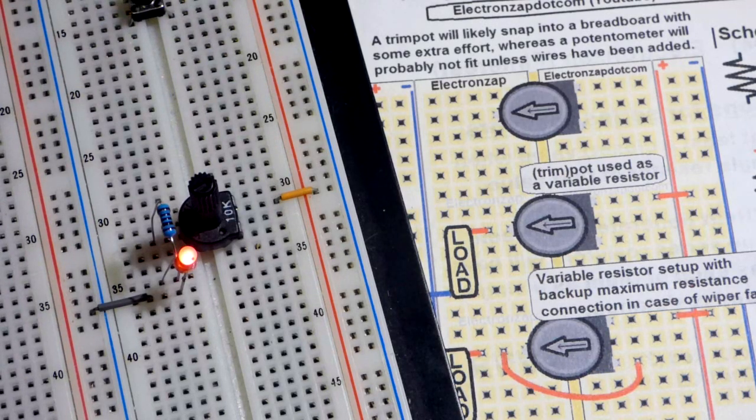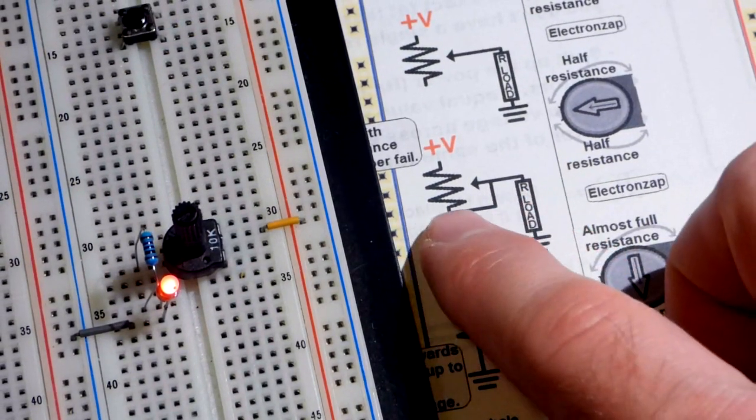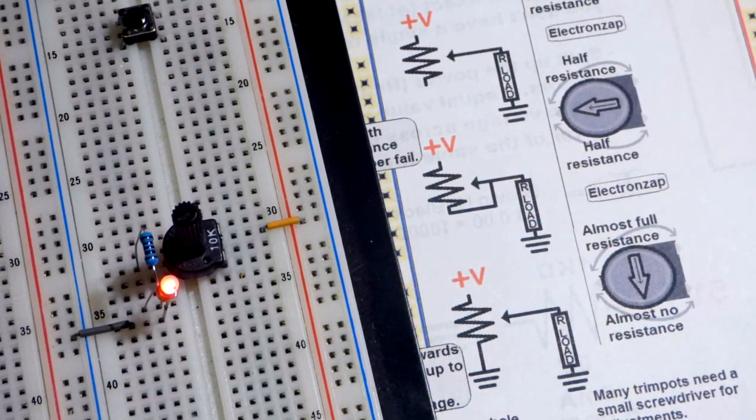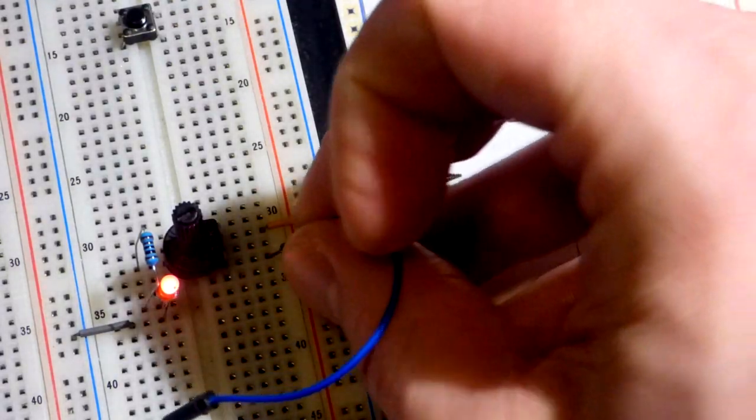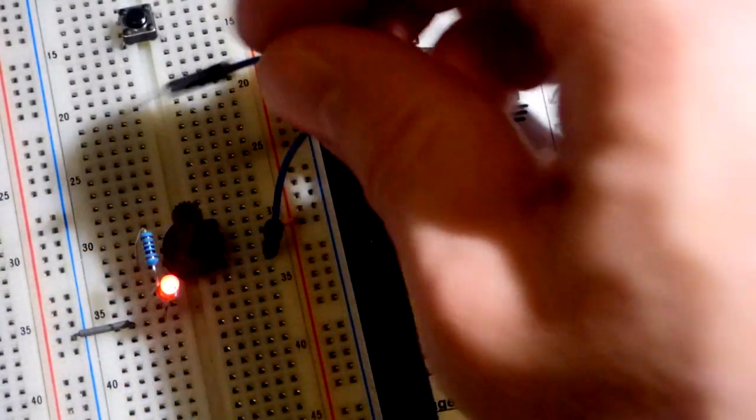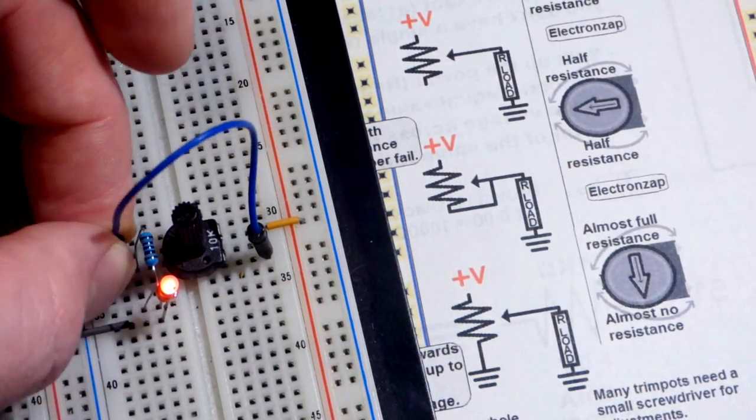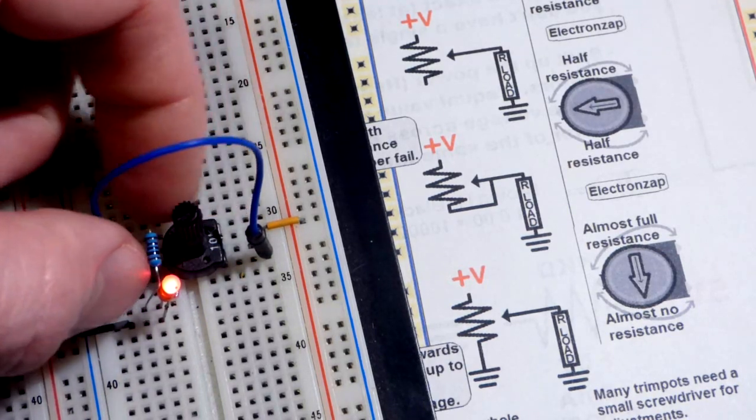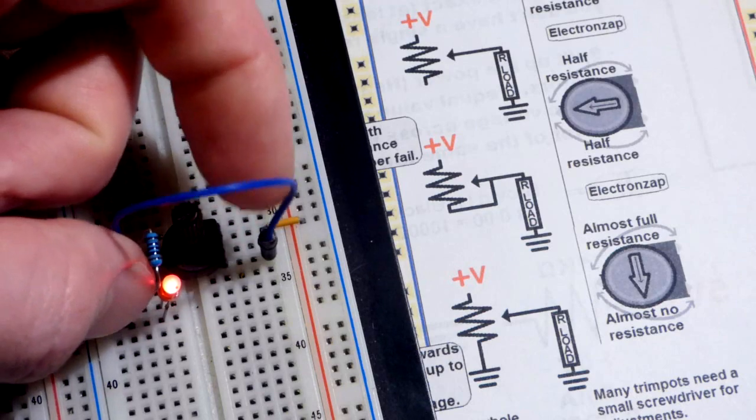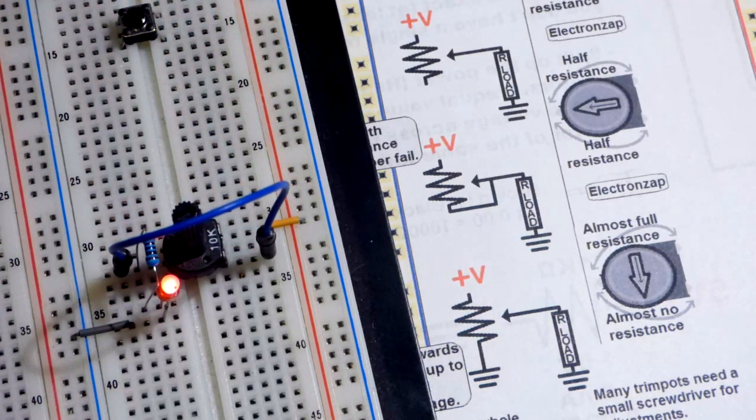So now, another thing is often you will see the trim pot with one of the terminals going back to the load. And so, what that means is that you have that from one of the inputs to where the output is and where the load starts. So what that means is that if the wiper goes bad, if it loses contact, there's still that resistive element there that will provide the full resistance. And then the load will not turn off completely.